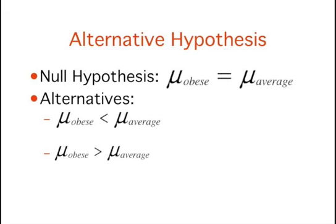One, the population mean for obese patients is less than the mean for average weight patients, and two, the population mean for obese patients is greater than the mean for average weight patients. Naturally, the direction of sample means determines which alternative is supported.